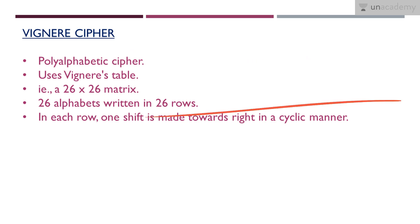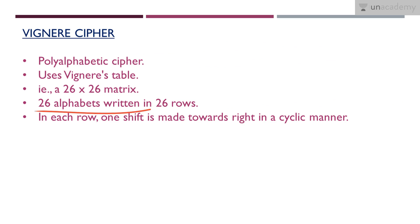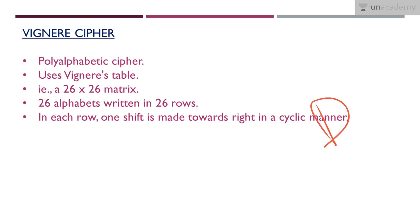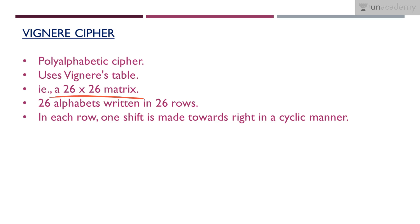We have 26 rows and 26 columns, with 26 alphabets forming the 26 rows. The first row has A, B, C, D up to Z, and the second row also has A, B, C, D up to Z. So up to 26 we have these 26 alphabets, making it a 26 by 26 matrix. In each row, one shift is made to the right in a cyclic manner.